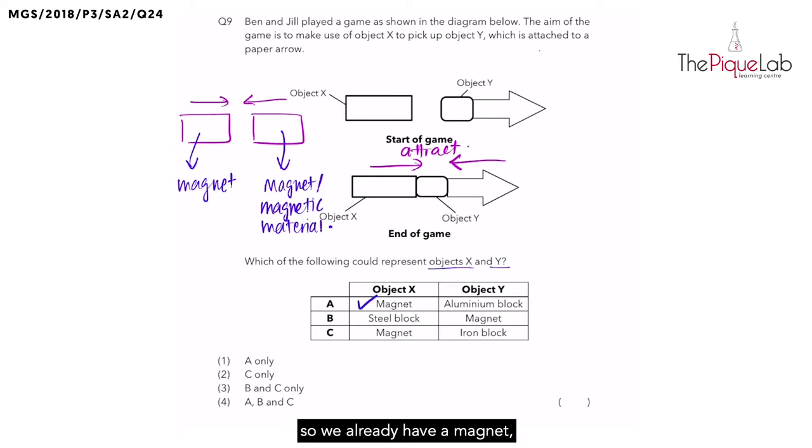So we already have a magnet, but how about the other object? It is made of aluminum. So we need to find out if aluminum is a magnetic material. And this is when students need to recall the four magnetic materials. What are the four magnetic materials? And how do I teach my students to remember them? I always teach them as S-I-N-C. Steel,